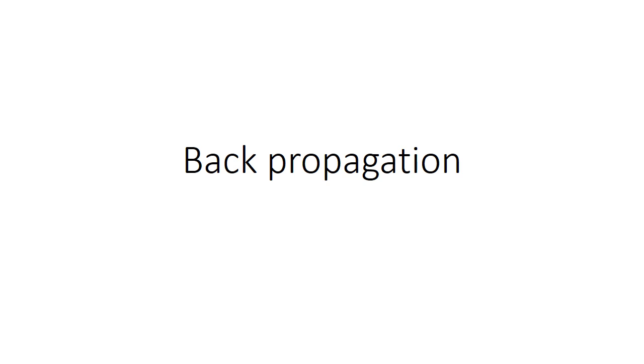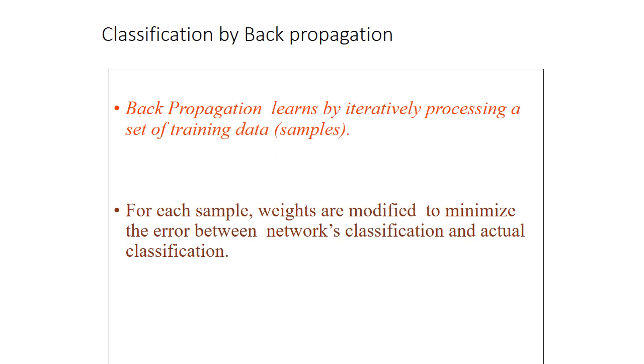There is one more term used in the concept of neural networks — backpropagation. What is backpropagation in the field of neural networks? Simply, the neural network is used for classification, and backpropagation learns by iteratively processing a set of training data samples.